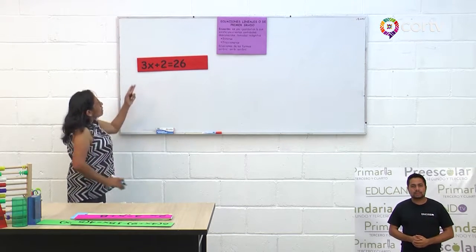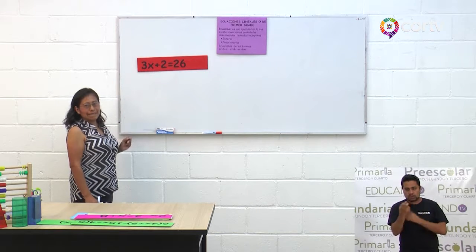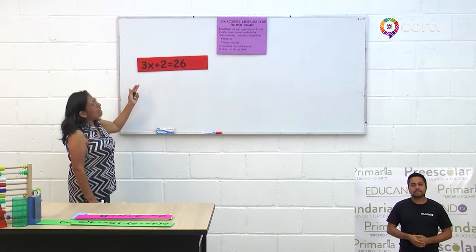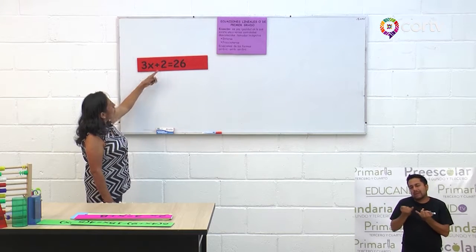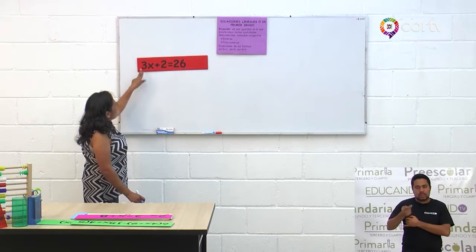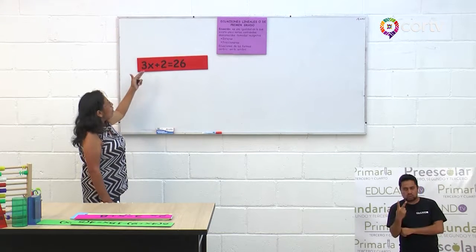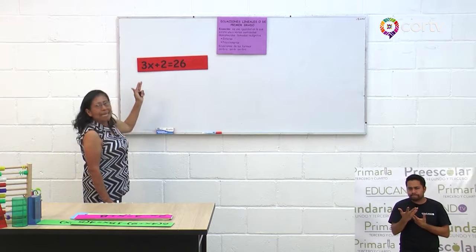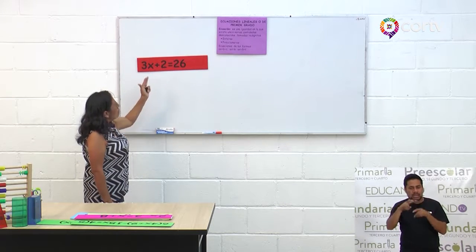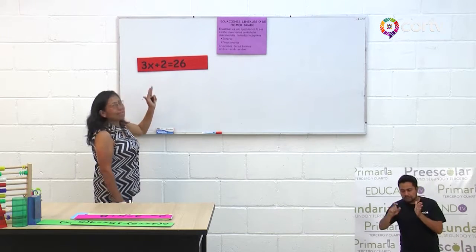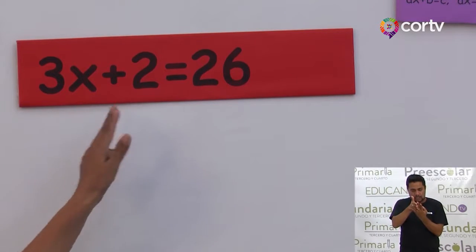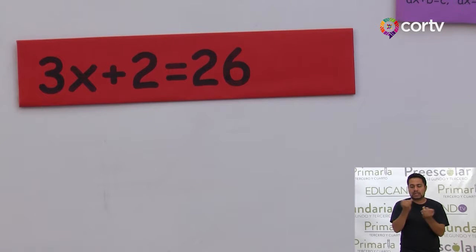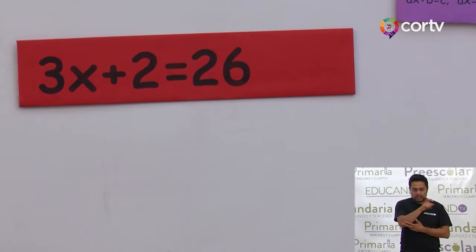Tenemos 3X más 2 igual a 26. Aquí tenemos una ecuación, es una igualdad. 3X más 2 es un miembro que está antes del signo igual, y el 26 es otro miembro que está después del signo igual. En medio de estos dos términos está el signo igual. Vamos a resolverlo: tenemos 3X más 2 igual con 26.